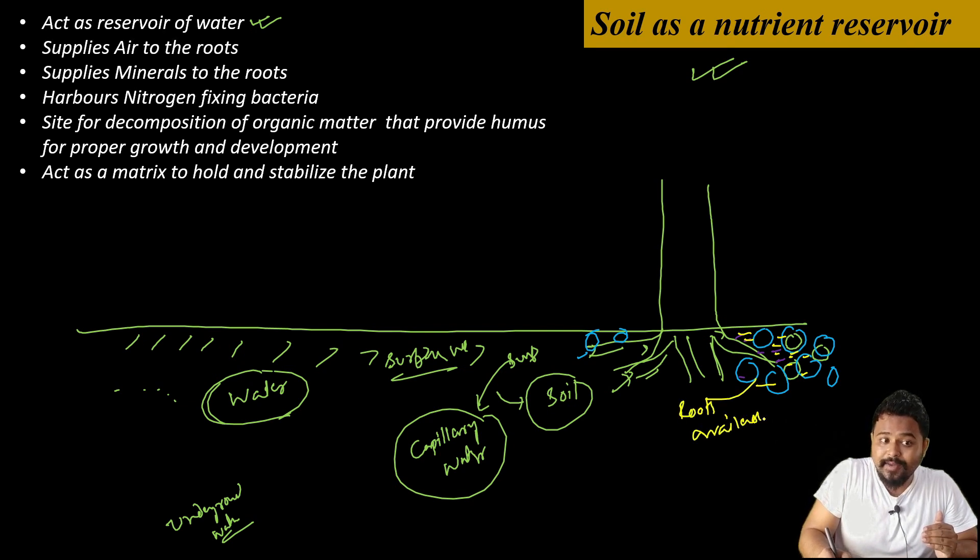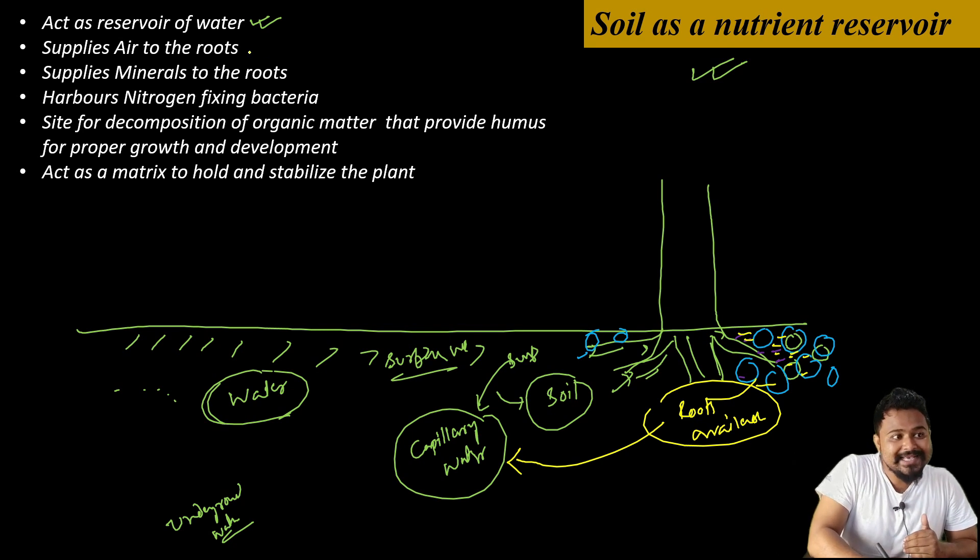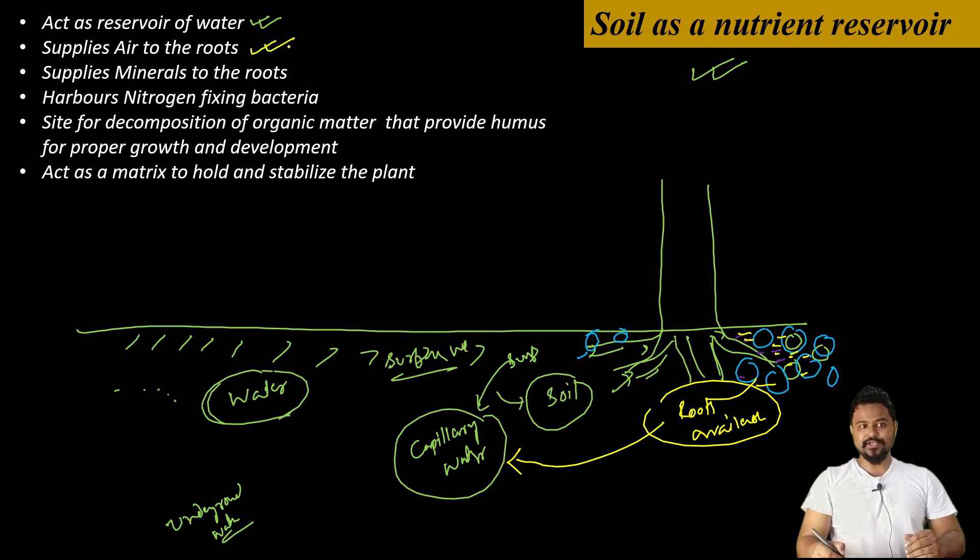This is capillary water. This water is available to the roots. So soil water is available, so it is a nutrient reservoir. Of course, water also contains nutrients - hydrogen and oxygen in H2O.